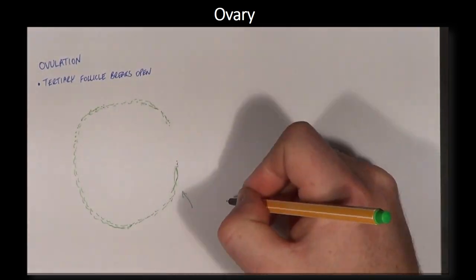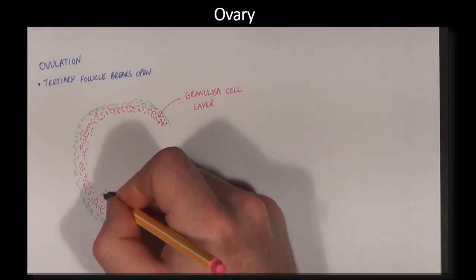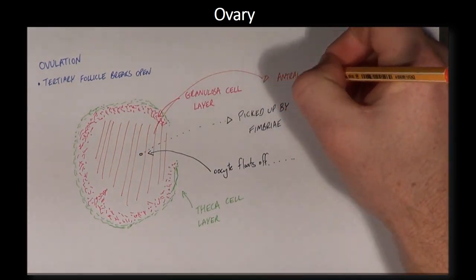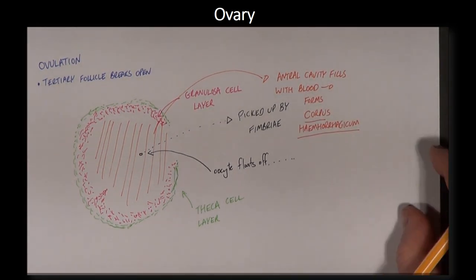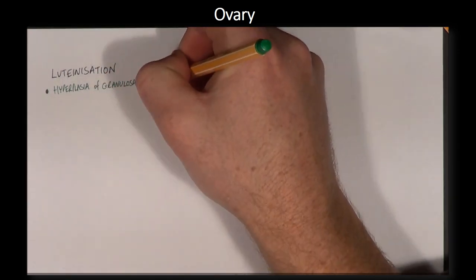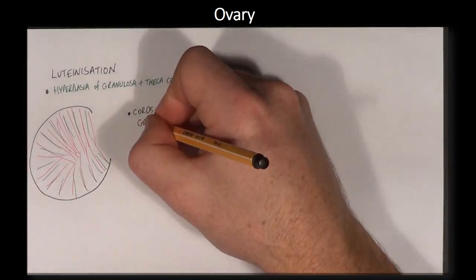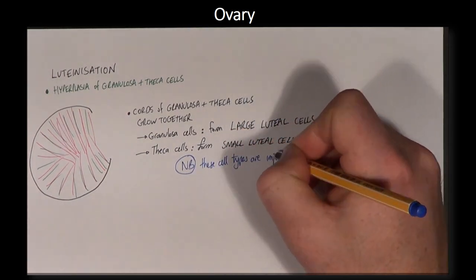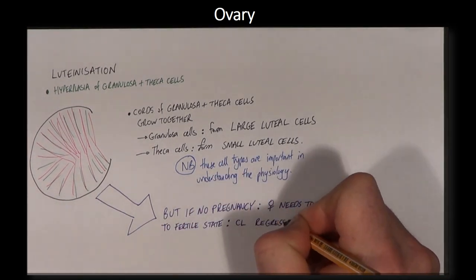The follicle breaks open and releases the oocyte, which is picked up by the fimbriae. The space where the follicular antrum used to be fills up with blood and is known as a corpus haemorrhagicum. The granulosa cells and theca cells undergo hyperplasia and change into different cell types: granulosa cells become large luteal cells and theca cells become small luteal cells. Sometimes the corpus luteum may have a fluid-filled cavity in the middle, which is completely normal and must be differentiated from a cystic corpus luteum. If there is no pregnancy, the corpus luteum regresses and is replaced by a corpus albicans, with the large and small luteal cells replaced by collagenous scar tissue.